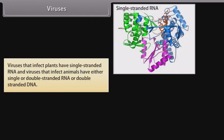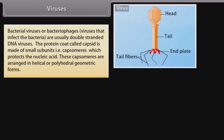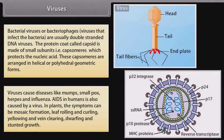Viruses that infect plants have single-stranded RNA, and viruses that infect animals have either single or double-stranded RNA or double-stranded DNA. Bacterial viruses, or bacteriophages, are usually double-stranded DNA viruses. The protein coat called capsid is made of small subunits called capsomeres, which protect the nucleic acid. These capsomeres are arranged in helical or polyhedral geometric forms. Viruses cause diseases like mumps, smallpox, herpes, and influenza.